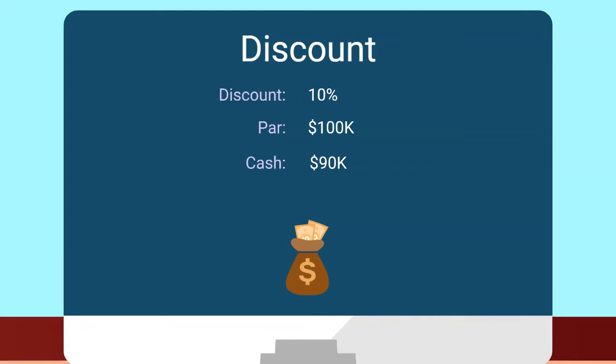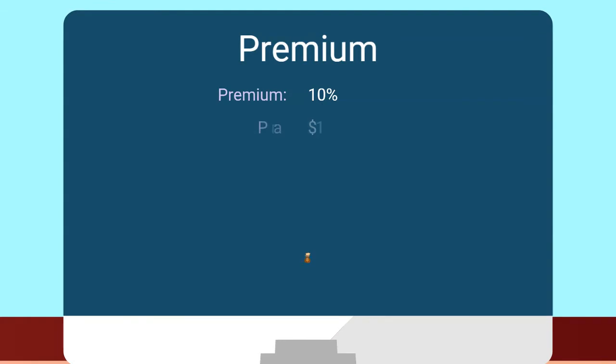But I'd still owe $100,000 at the end of the life of that debt? Yep. And a premium would work the exact opposite way. A 10% premium means you'd get $110,000 in cash, but only owe $100,000 at the end of the loan. What would the journal entries look like?